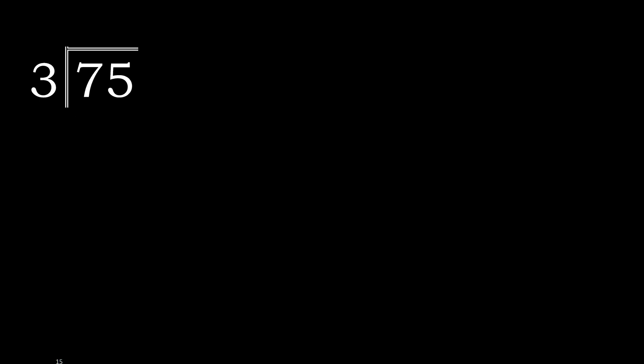75 divided by 3. Here, 7 is not less — therefore with 7, 3 multiplied by which number is nearest to 7 but not greater? 3 multiplied by 3 is 9, and 9 is greater. Therefore, 3 multiplied by 2 is 6. 7 minus 6 is 1.